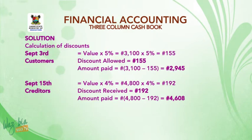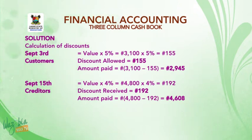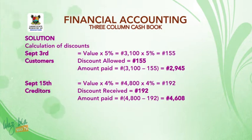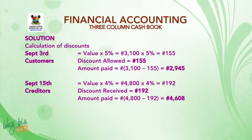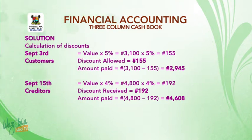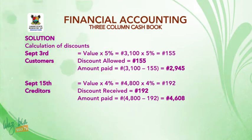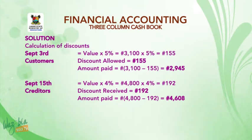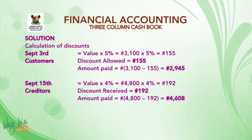The solution to this illustration: first, look at the transactions involving discounts — there are two, on the 3rd and the 15th. On September 3rd, we received a check from a customer less 5%. The calculation is: $3,100 multiplied by 5/100, which gives us $155. So the discount we are allowing to the customer is $155. We subtract $155 from $3,100, giving us $2,945 — that is the amount the customer pays us.